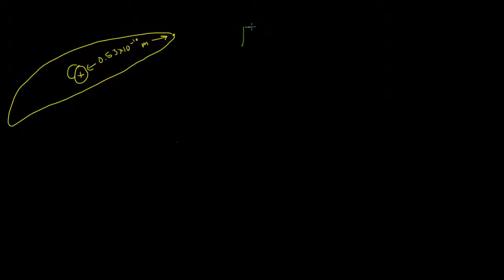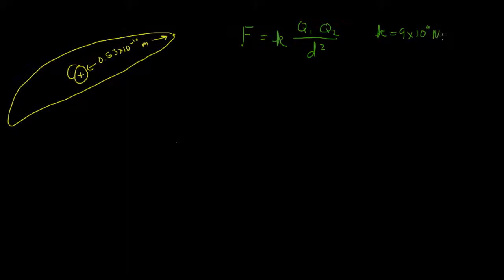To solve for the electrical force, we'll use Coulomb's law. The force between two charged particles is equal to the proportionality constant times the charge of the first particle times the charge of the second, divided by the distance between them squared. Recall that k is 9 times 10 to the 9th newton meters squared per coulomb squared. Also recall that the elementary charge on an electron or a proton is 1.602 times 10 to the negative 19th coulombs.